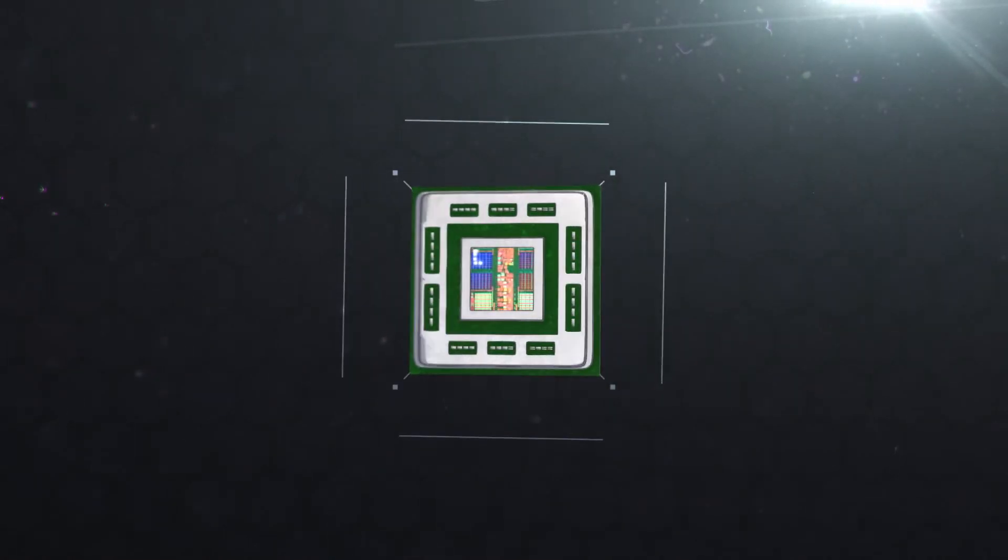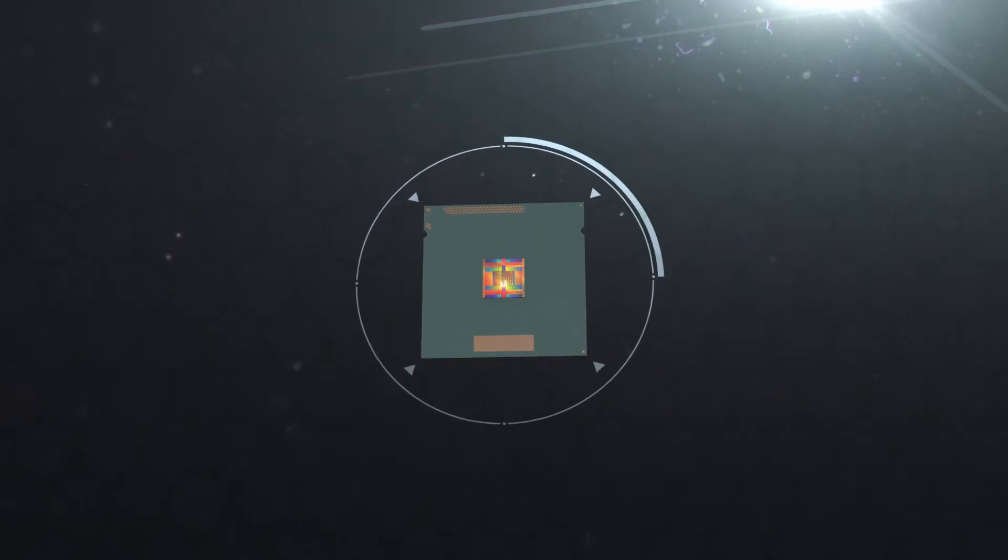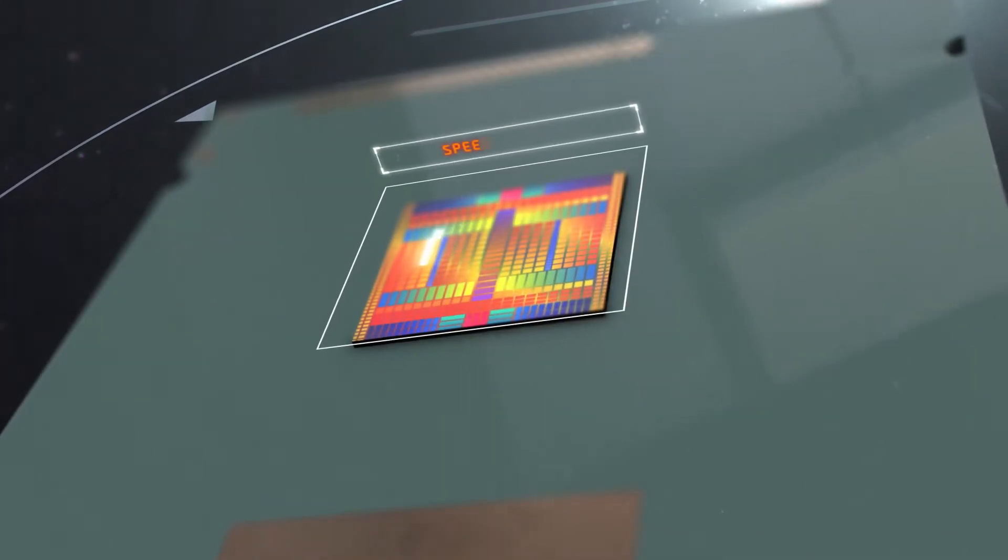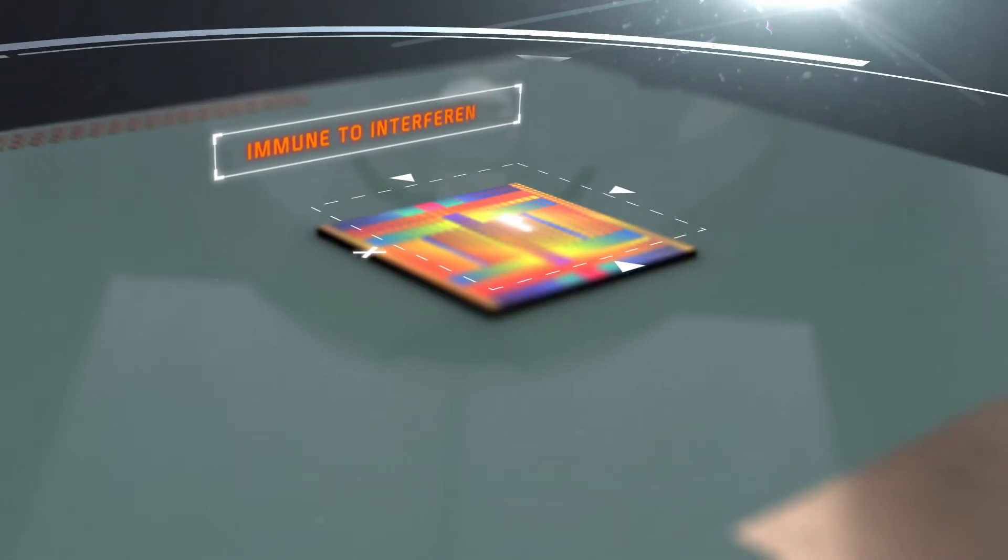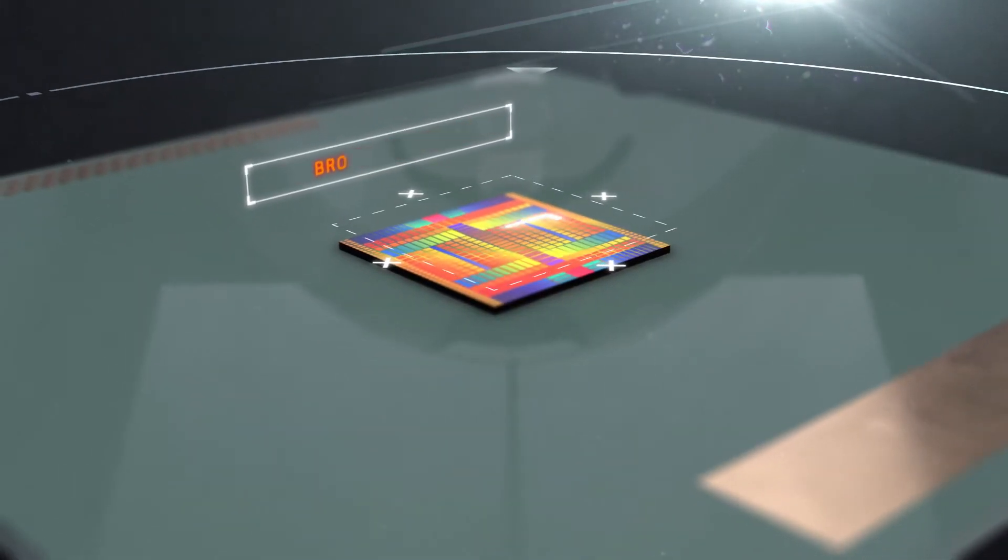Current electronic processors use electricity or electrons which make for bulky, slow, and energy-hungry processors. Our photonic processors use photons, the building blocks of light. They move at the speed of light. They benefit from being very compact, energy efficient, immune to electromagnetic interference, and super broadband fast.